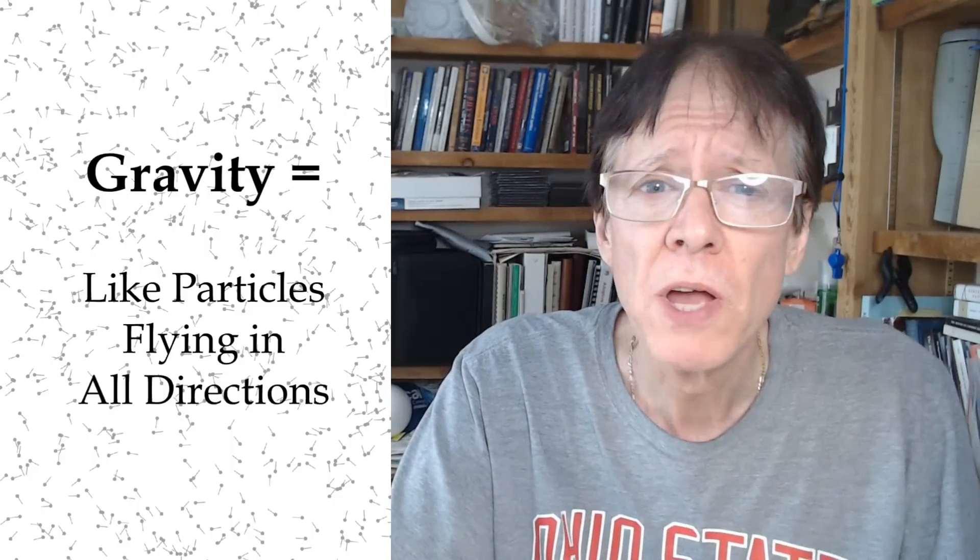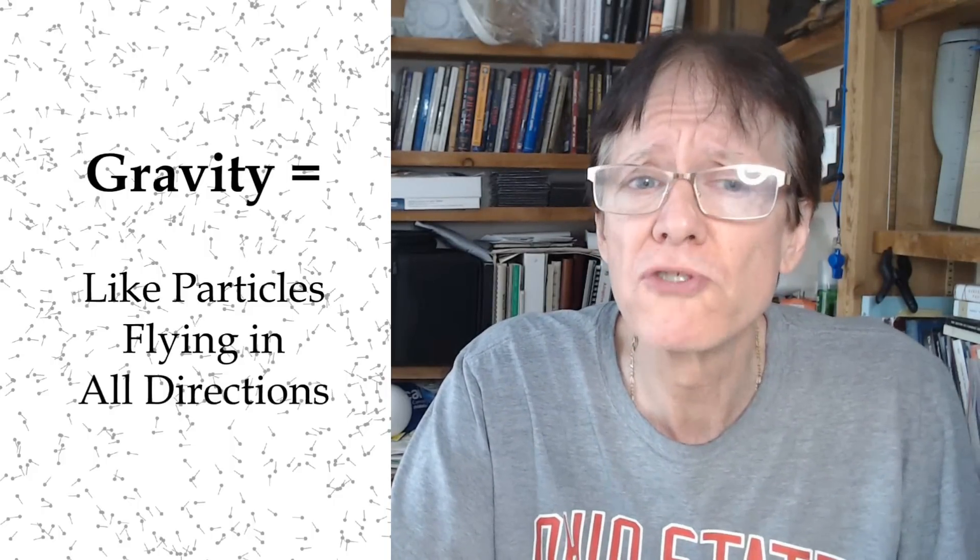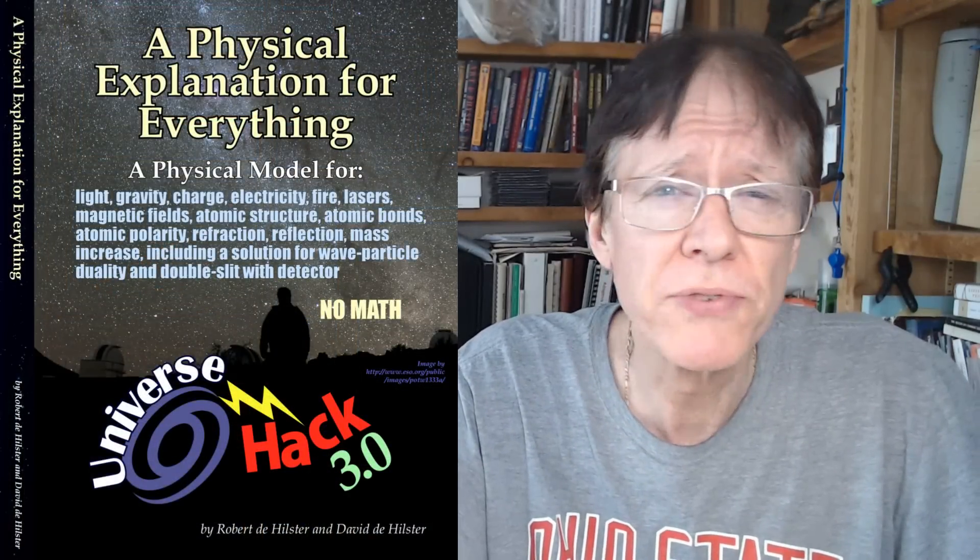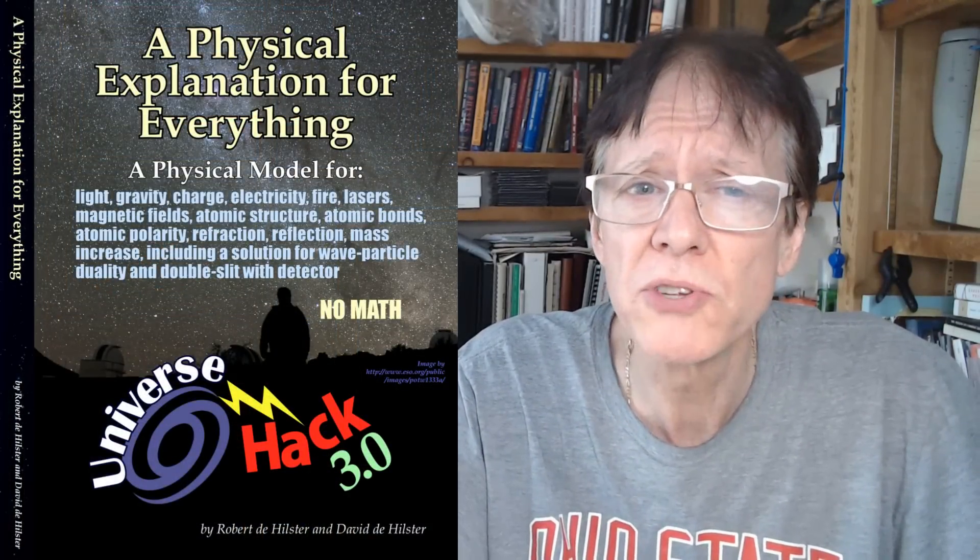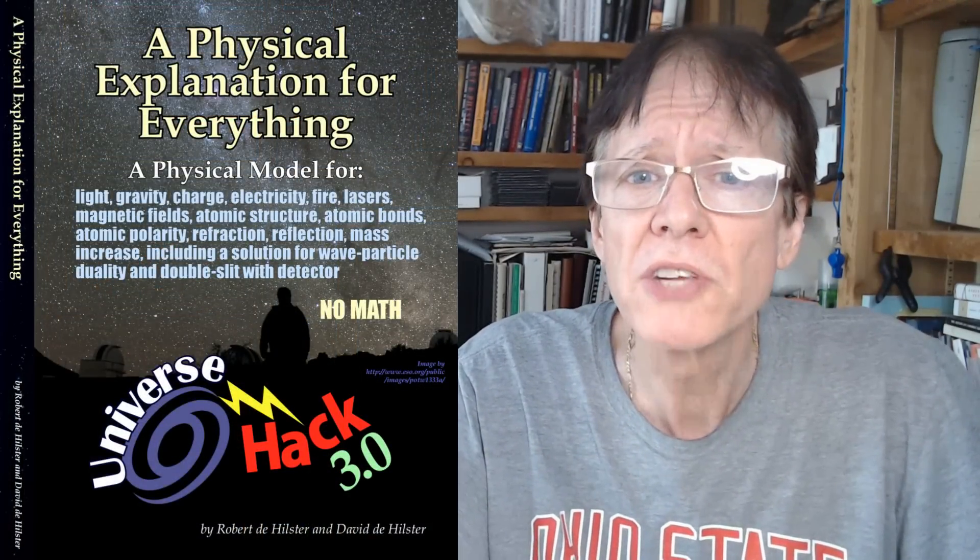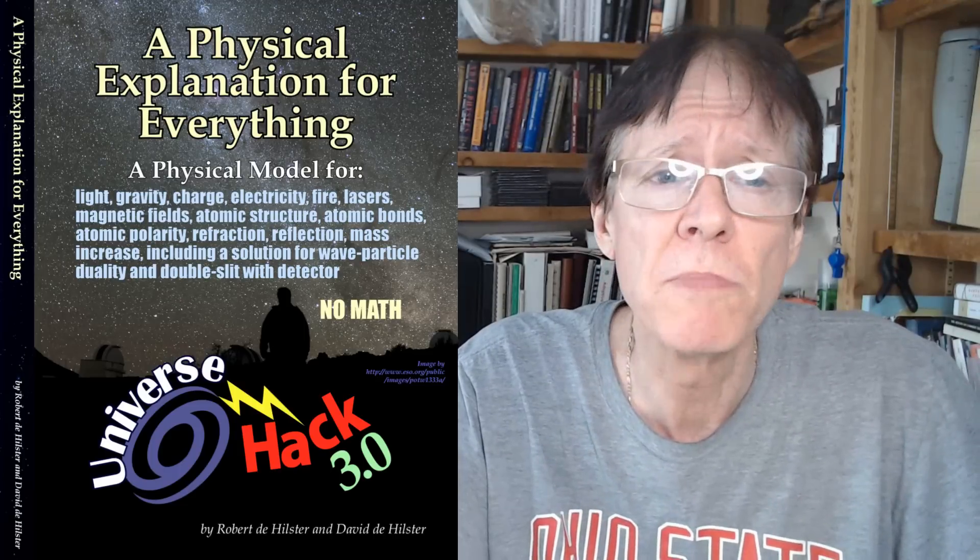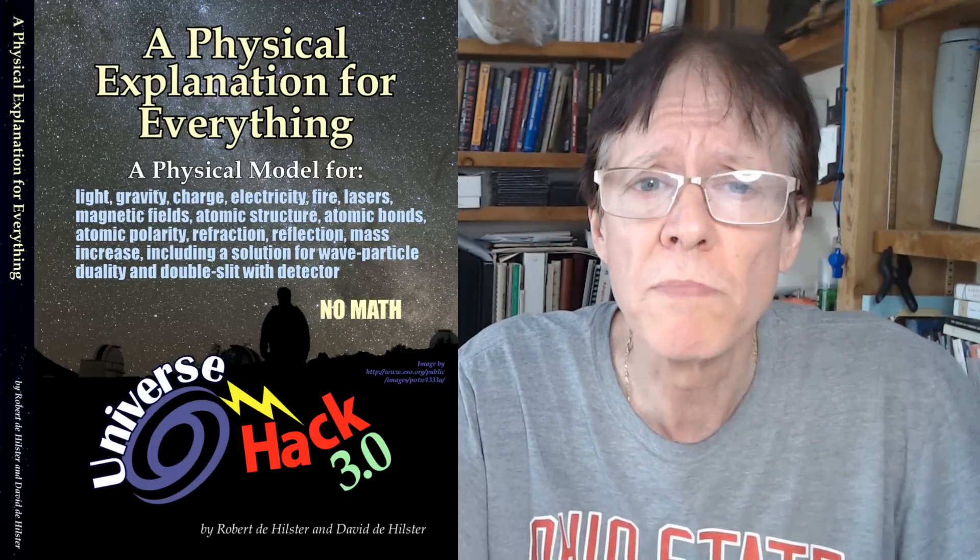In the particle model, gravity is caused by similar particles traveling in random directions. The G1 particle replaces the photon, electron, electricity, and magnetic fields, thus greatly simplifying the standard model. Like the Borchardt model, it has infinite levels and only works with Newtonian concepts.